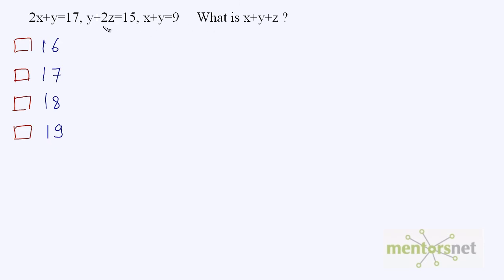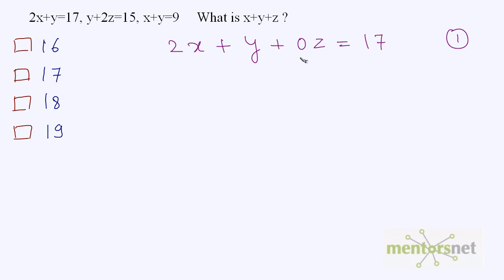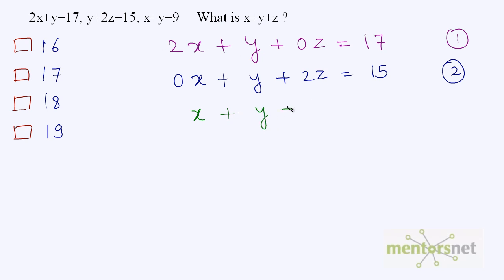Let's move on to the last question of this video. You have been given 3 equations and will have to find the values of 3 variables — 3 equations, 3 variables, it is possible. The equations are: 2 times (x plus y) plus 0z is equal to 17; 0x plus y plus 2z is equal to 15; and x plus y plus 0z is equal to 9. Writing the zero-coefficient terms keeps the equations properly organized.